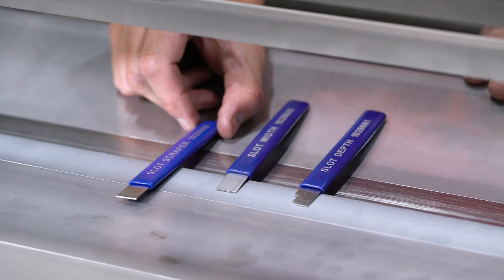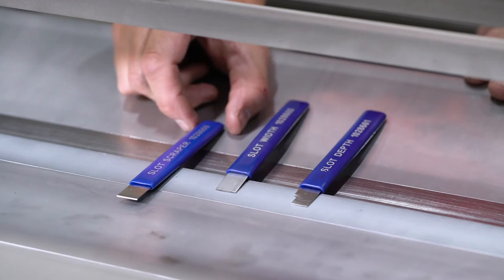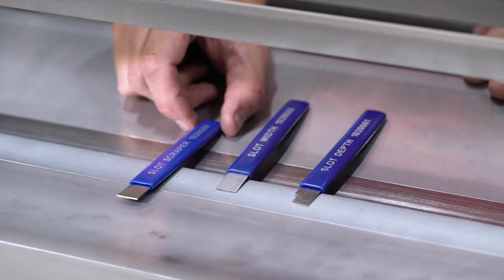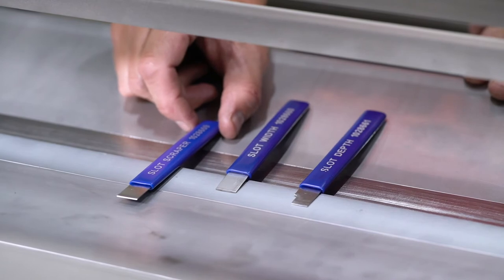You use the slot scraper tool which is used to clean the slot of the blade guide and that's the only thing you should use. Anything wedged will cause the blade guide to crack.